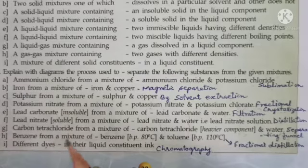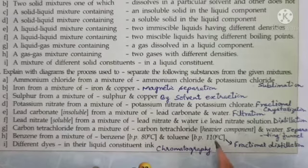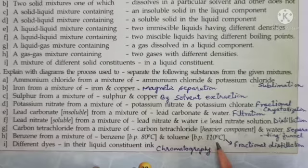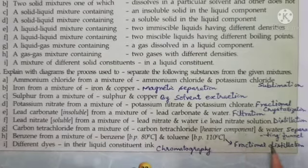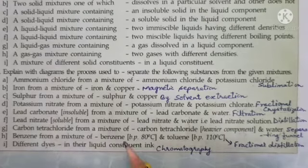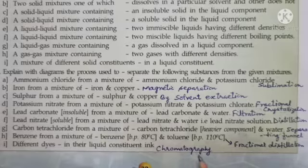H: benzene from a mixture of benzene (boiling point 80°C) and toluene (boiling point 110°C). These are two miscible liquids with different boiling points, so you will use fractional distillation. Last: different dyes in their liquid constituent ink — the method used is chromatography.